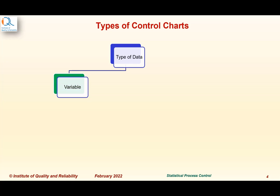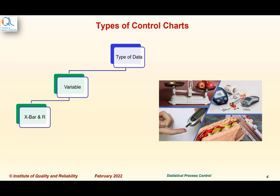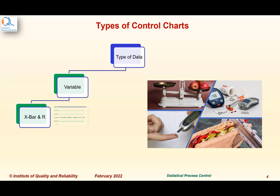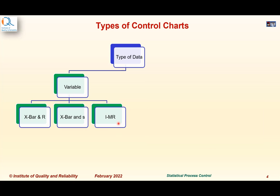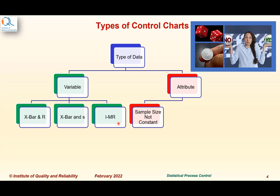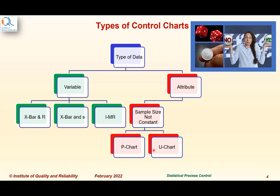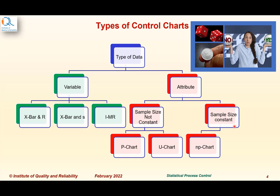How do we select the type of control chart to use? That depends on the type of data. If we have variable data, we have a choice of X-bar and range chart, X-bar and standard deviation chart, or individual and moving range charts. If we have attribute data and the sample size is not constant, we use a P chart or U chart. If the sample size is exactly constant, we can use an NP chart or C chart.